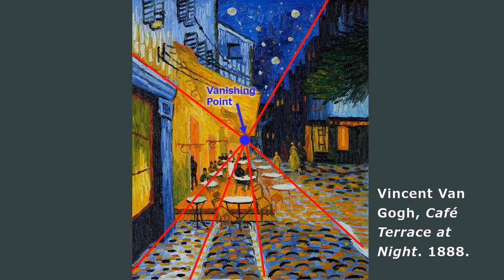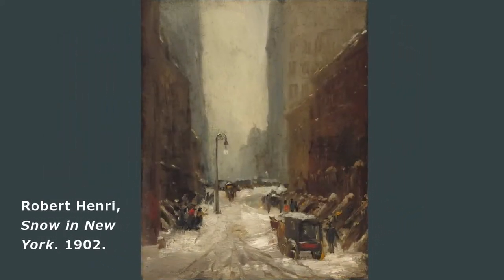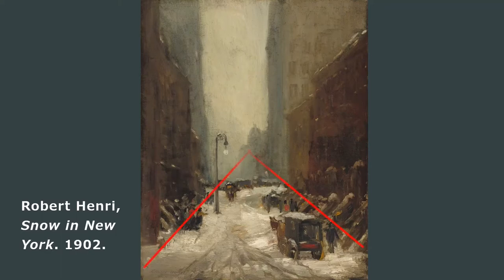Here is another painting of Snow in New York by Robert Henry in 1902. Again, if we draw lines on the street and down the tops of the buildings, they would meet in the center at the vanishing point.